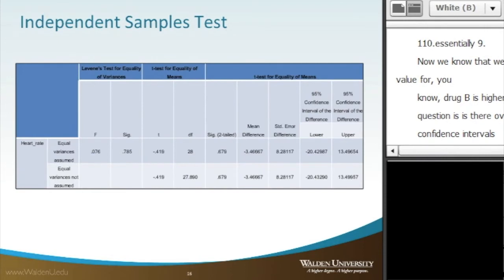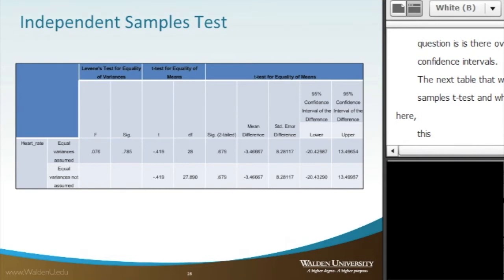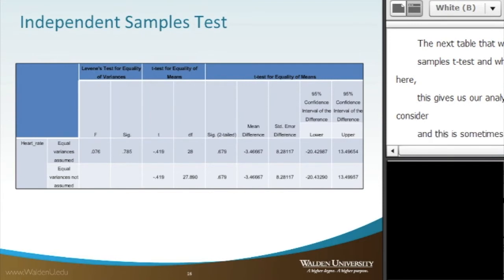The next table that we look at is titled independent samples t-test. And what we're going to look at here, this gives us our analysis. And one thing to consider, and this is sometimes confusing to students, is the Levene's test for equality of variances, which is the first thing that we actually see on the left-hand side.